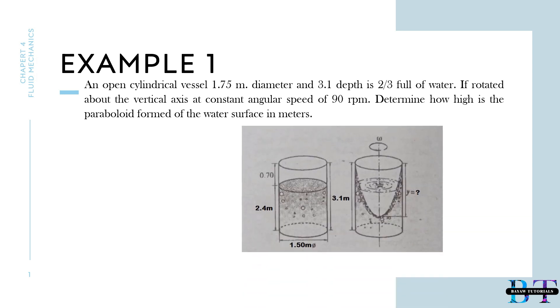So this is our figure. Given: we have the diameter of the vessel is equal to 1.75 meters, the height of vessel is equal to 3.1 meters, the height of water is equal to 2.4 meters, and the radius is equal to 0.875 meters. To convert the 90 rpm to rad per second, we have the formula.